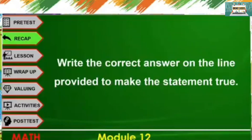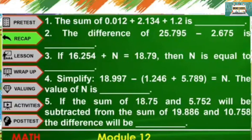Let's have a recap. Write the correct answer on the line provided to make the statement true. Number 1: The sum of 0 and 12 thousandths plus 2 and 134 thousandths plus 1 and 2 tenths is blank. Number 2: The difference of 25 and 7 hundredths and 2 and 6 hundredths is blank. Number 3: If 16 and 254 thousandths plus N is equal to 18 and 79 hundredths, then N is equal to blank.